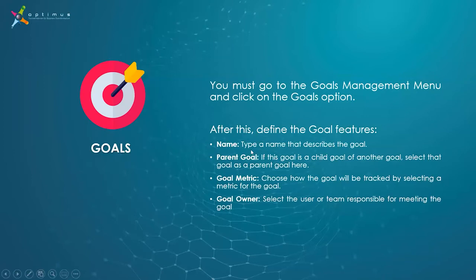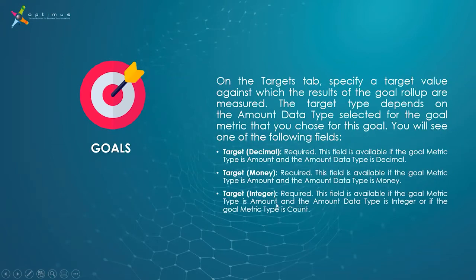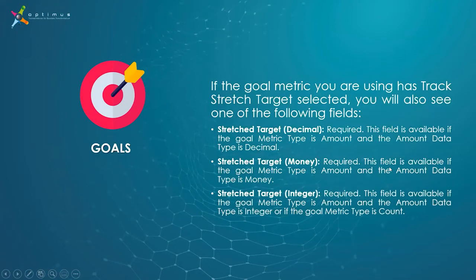To summarize the goal configuration: you define the name, optionally link a parent goal, select the goal metric, set the owner, and define the target — which can be a number, a money value, or an integer. If the goal metric has 'Track Stretch Target' enabled, you will also see a stretch target field, which tracks progress when the metric type is Amount and the data type is Decimal.